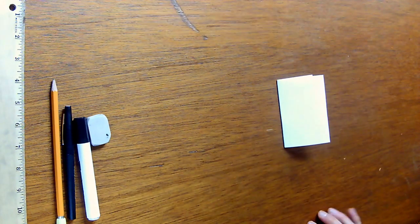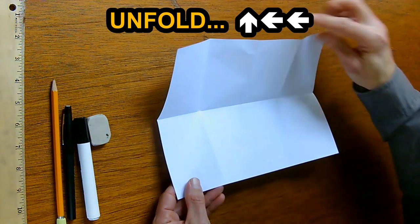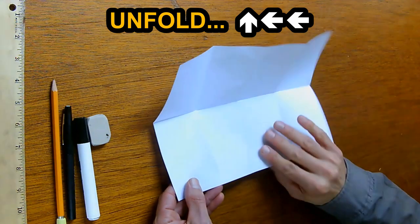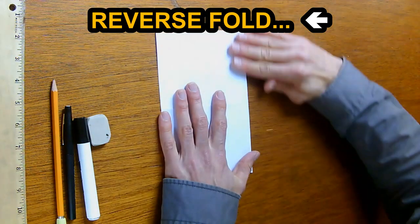And this gives us our final page size. But it's not a book yet. We have to unfold all this, open it up, and I'm going to look down into the valley here, place my left hand and reverse that center fold. There we go.